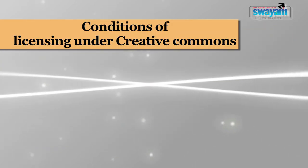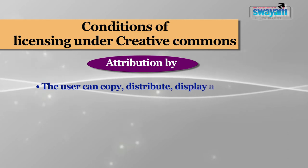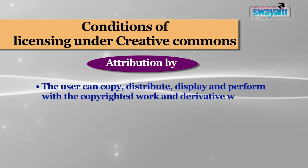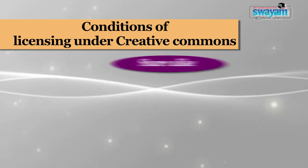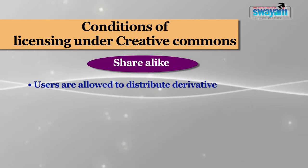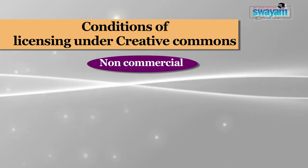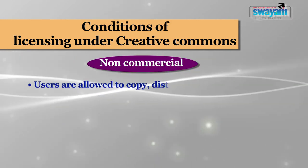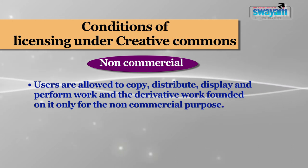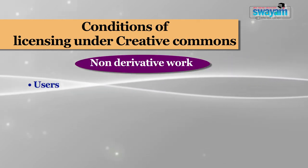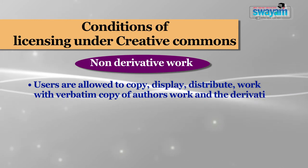The conditions of licensing under Creative Commons are as follows. First is Attribution (BY): the user can copy, distribute, display, and perform with the copyrighted work and derivative works based on it, only if they give credit to the way the author has requested. Second is Share Alike: users are allowed to distribute derivative work only under a license identical to the license that governs the author's work. Third is Non-Commercial: users are allowed to copy, distribute, display, and perform work and the derivative work based on it only for non-commercial purposes. Fourth is Non-Derivative Work: users are allowed to copy, display, and distribute verbatim copies of the author's work, but derivative work is not allowed.